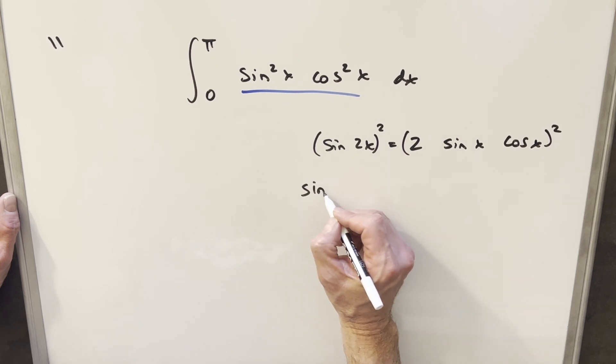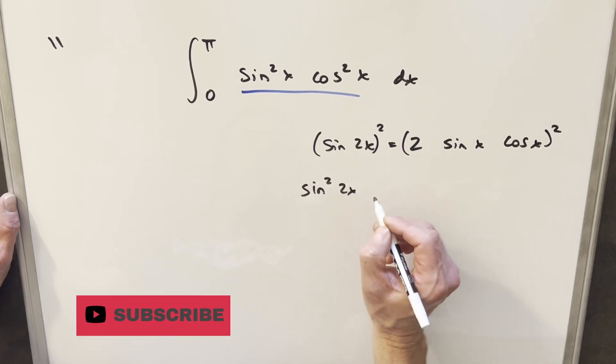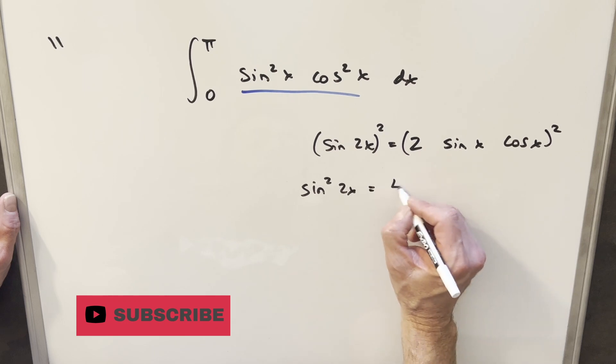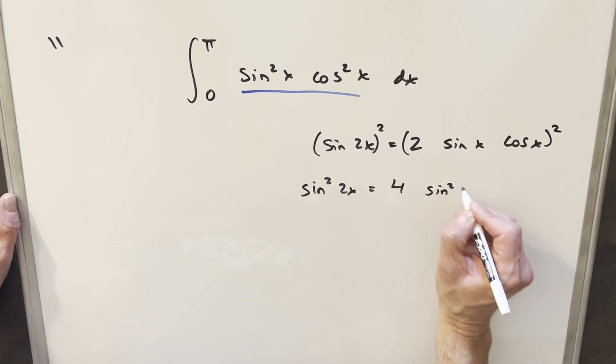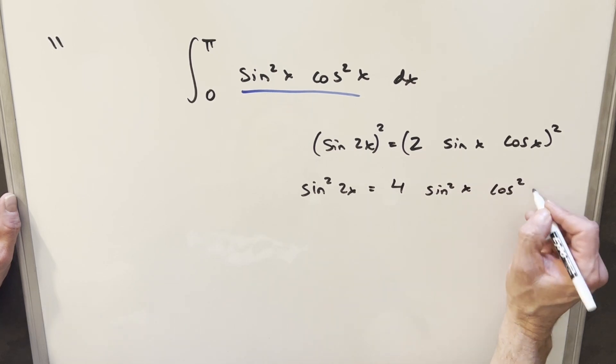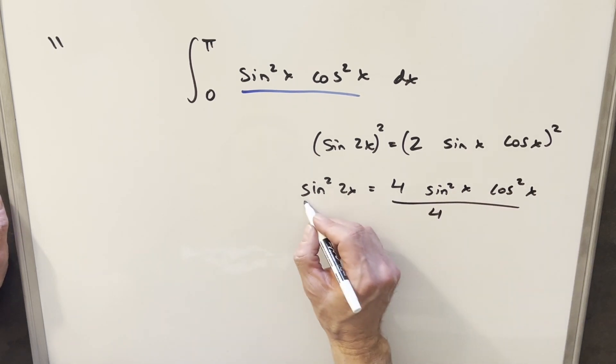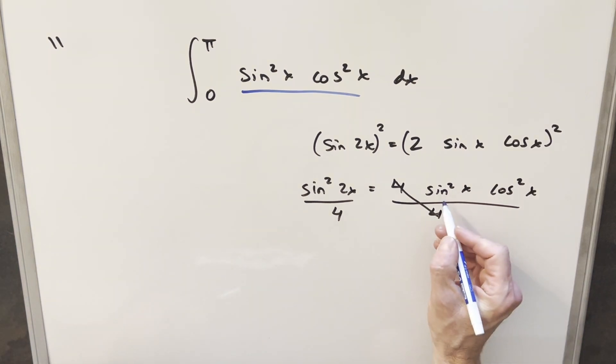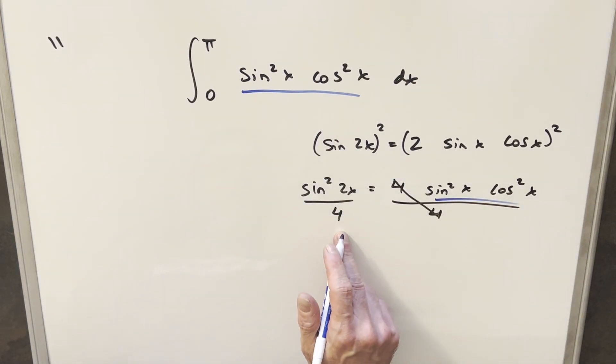this here, just changing the notation, on the left side we'll have sine squared 2x. Squaring everything here we get 4 sine squared x cosine squared x. But then I'll divide by 4 on both sides. This will cancel here. But then this is exactly what we have in our integral, so we have a different way to write this. We can write this as sine squared 2x over 4.